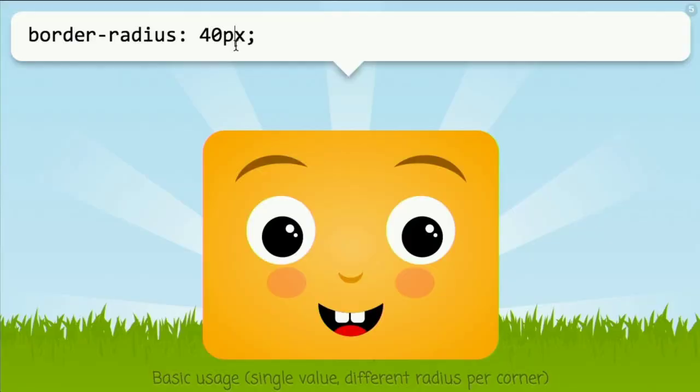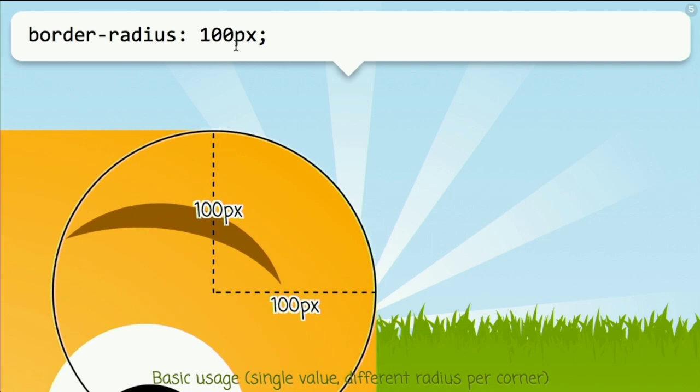Not only is BorderRadius really cool right now, but it will also become incredibly cool in the future with Backgrounds and Borders Level 4, if any of the stuff in there actually makes it to browsers. The reason most people think BorderRadius is not cool is because they just see the tip of the iceberg. You specify a single value, you get some rounding — the bigger the value, the bigger the rounding. The value just specifies the radius of a circle in each corner.